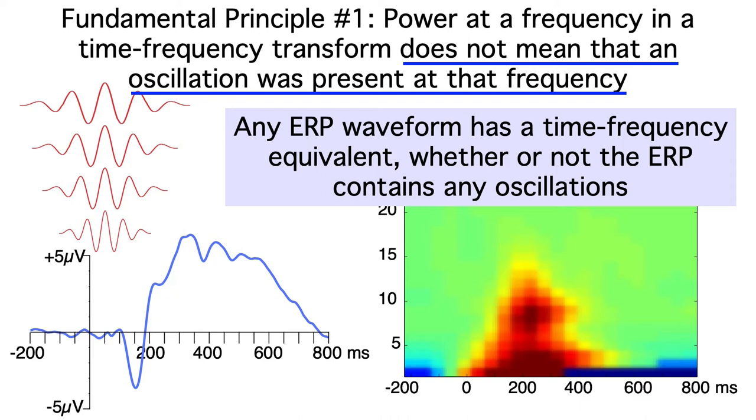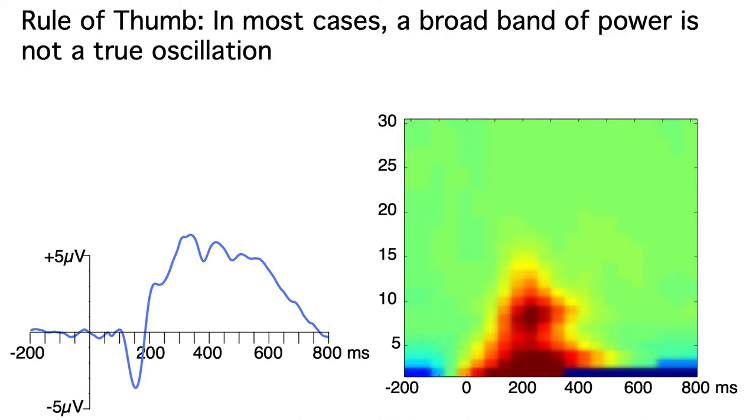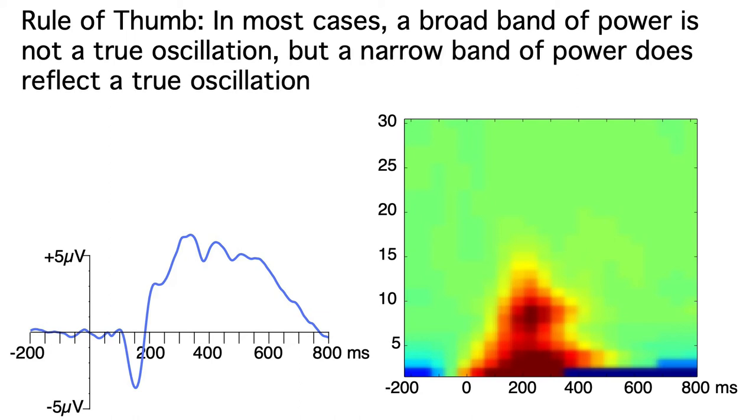So how can you tell if a genuine oscillation is present? Here's a rule of thumb. In most cases, a broad band of power means that it's not a true oscillation, but a narrow band of power means that it is a true oscillation.